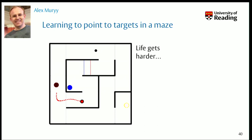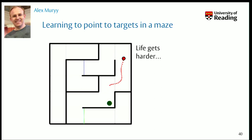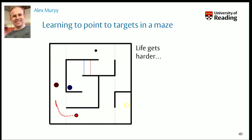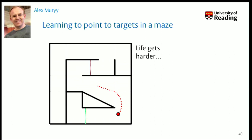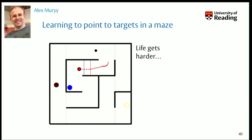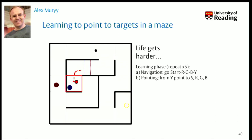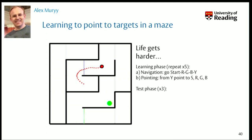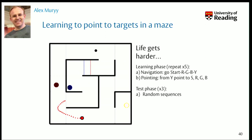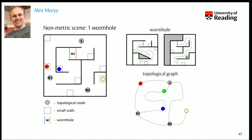Watch what happens when they go through this: it's a wormhole, and as they come through it the scene changes. They go through again and the scene changes again, then goes back to the original configuration. We do that to push them to the limit and see what kind of representation they build when the scene is varying like this. They have a learning phase, navigate in a particular order, and then point from the last target they reach. They do quite a lot of learning then perform three test phases, and that's the data I'll show you.